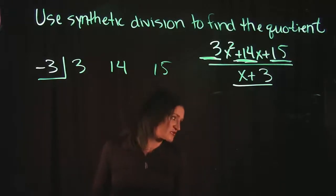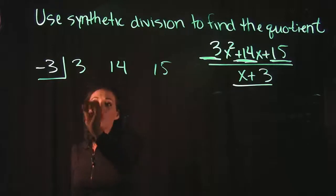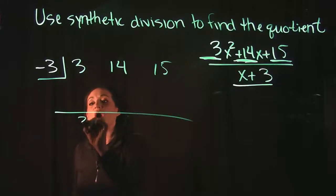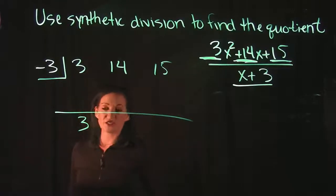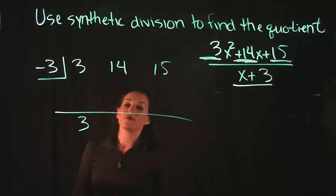And this is the way synthetic division works. The first one here, so 3, 14, and 15 are the coefficients of our equation. Your first number is always going to drop down. This 3 is just going to drop down. That's the first step: drop down the first number.